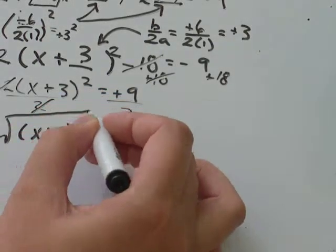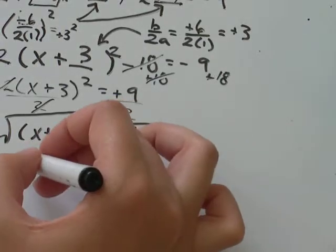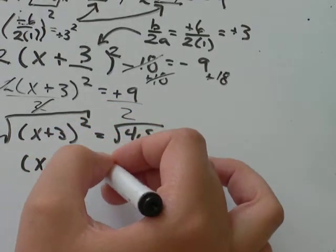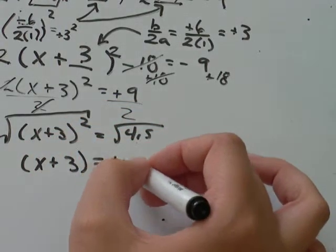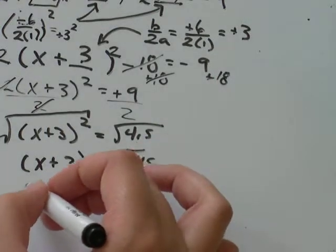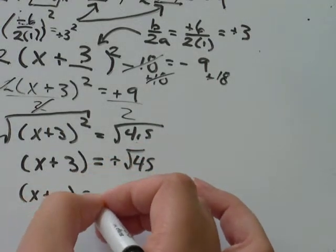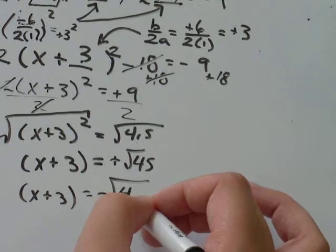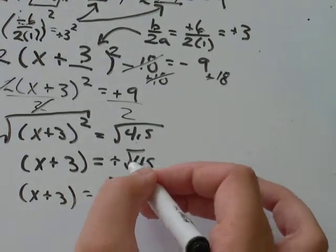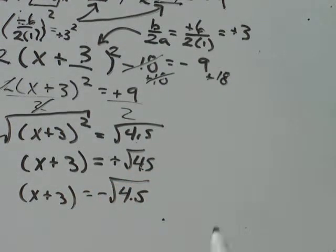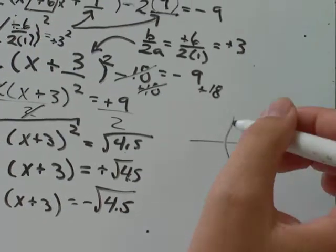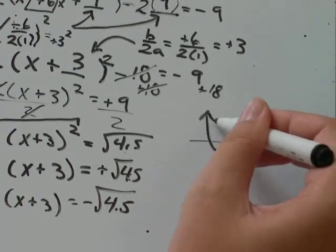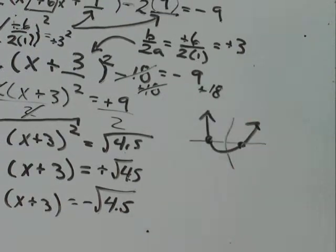all you need to do is take the square root of both sides and we'll get x + 3 equals positive the square root of 4.5 and x + 3 equals negative the square root of 4.5. It's really important you have your plus and minus because that gives you your two solutions. A lot of parabolas have two places where it crosses the x-intercept.